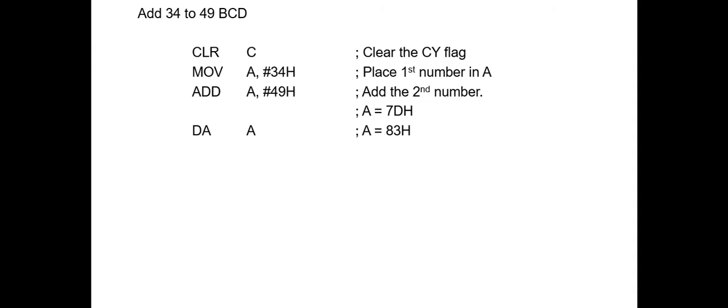Now let's move the 34H data to accumulator. Now we want to add this 49. So use the ADD instruction A, 49H. So 34 plus 49 and it will give the answer 7DH. So this is the result.